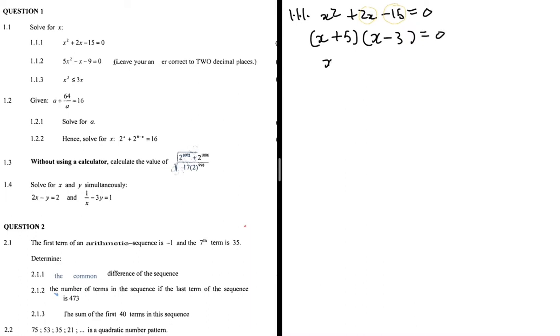So x + 5 = 0 or x - 3 = 0, giving us x = -5 or x = 3.